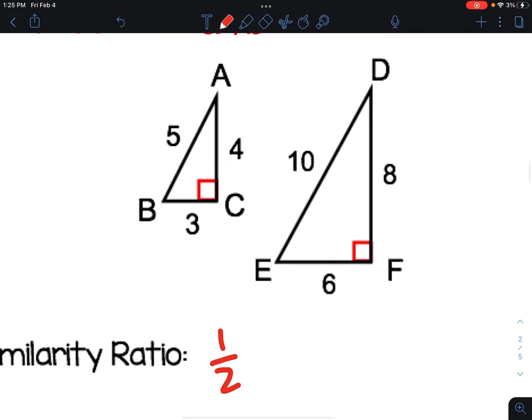Now the area is base times height, cut in half, because it's half a rectangle. So 3 times 4 is 12, 12 divided by 2 is 6.